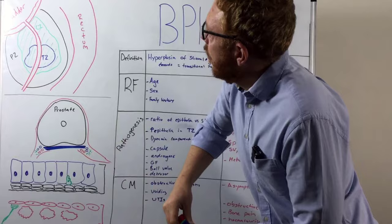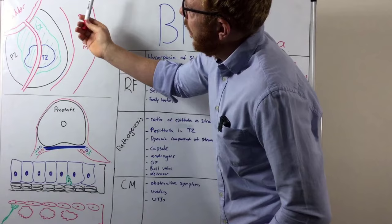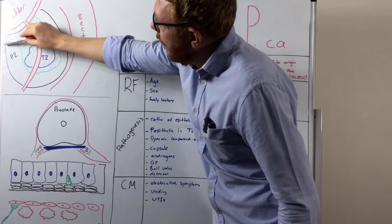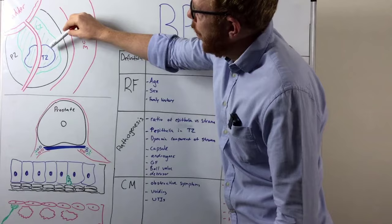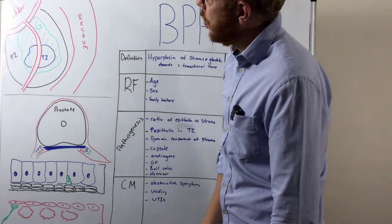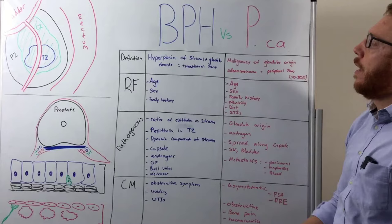The enlargement appears most evident in the transitional zone, which is the middle part of the prostate. If you look at this image — cutting through the prostate in a sagittal plane — we can see the bladder at the top, the urethra going through it, the whole prostate on the outside, and the rectum behind. The innermost blue zone is the transitional zone, which is most affected with BPH.